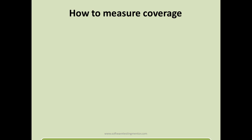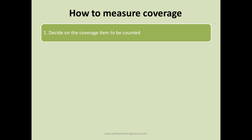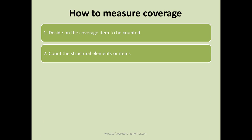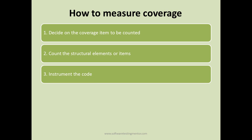To measure coverage, the first step is to decide on the coverage item to be counted — what you want to count. The second step is to count all the structural elements or items that need to be covered, giving you the total count of coverage items. The third step is to instrument the code — in white box testing, coverage measurement is mostly done by tools that are intrusive in nature.